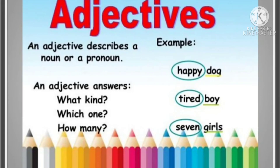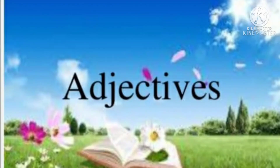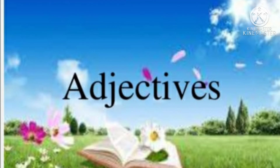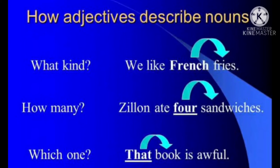Now let us move on to forming adjectives. We can form adjectives from nouns and verbs using suffixes and prefixes. A prefix is added before a word; a suffix is added at the end. Suffixes include: -ful, -less, -y, -ly, -ish, -ian, -ic, -al, -ive, -ry, -able, -tal, -ous. For example: 'care' + -ful = 'careful'; 'act' + -ive = 'active'; 'child' + -ish = 'childish.'